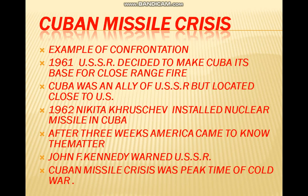Now we come to the next topic: the Cuban Missile Crisis. The Cuban Missile Crisis is considered an example of confrontation and tension that developed between the US and USSR during the Cold War. In 1961, the USSR decided to make Cuba a Russian missile launching base to attack the US from close range. Cuba was an ally of the USSR but was located close to the US. In 1962, Nikita Khrushchev, the leader of the Soviet Union, placed nuclear missiles in Cuba.